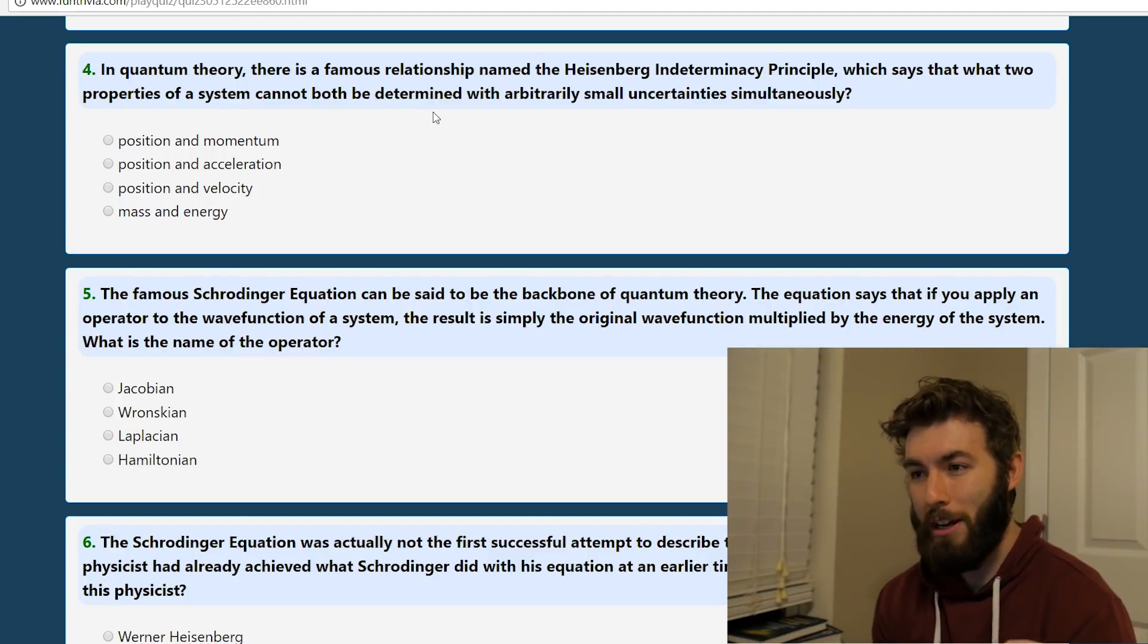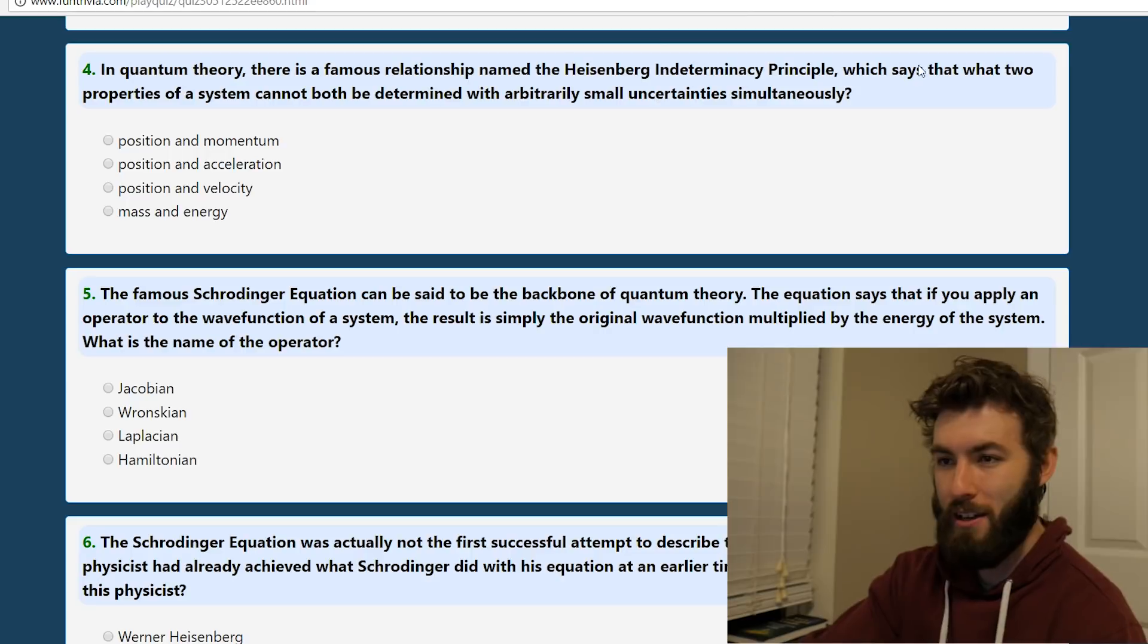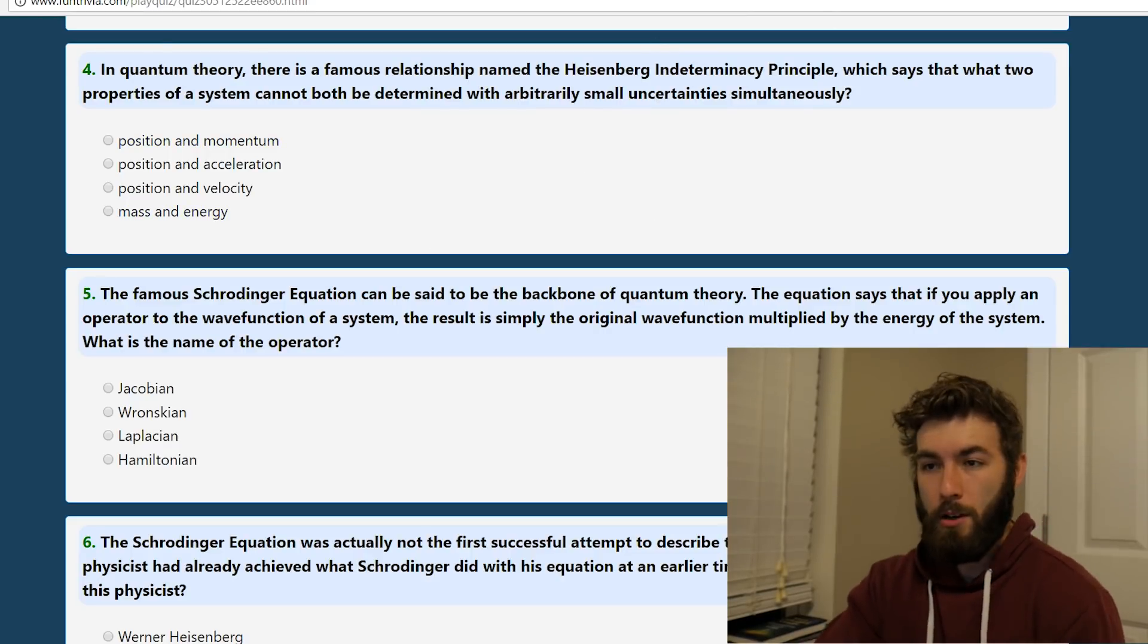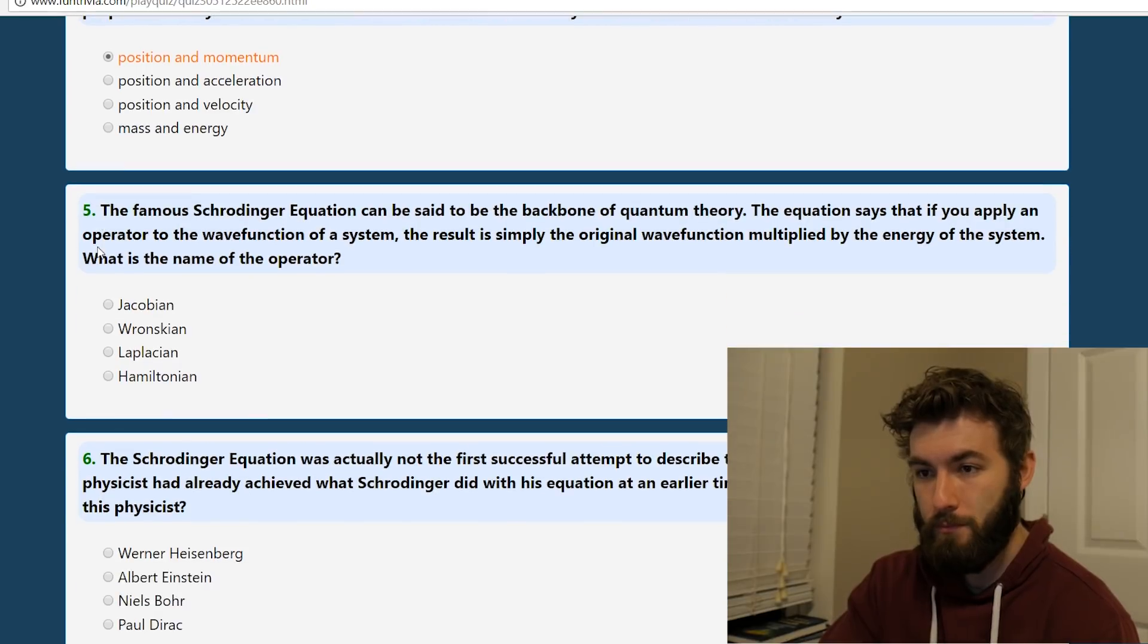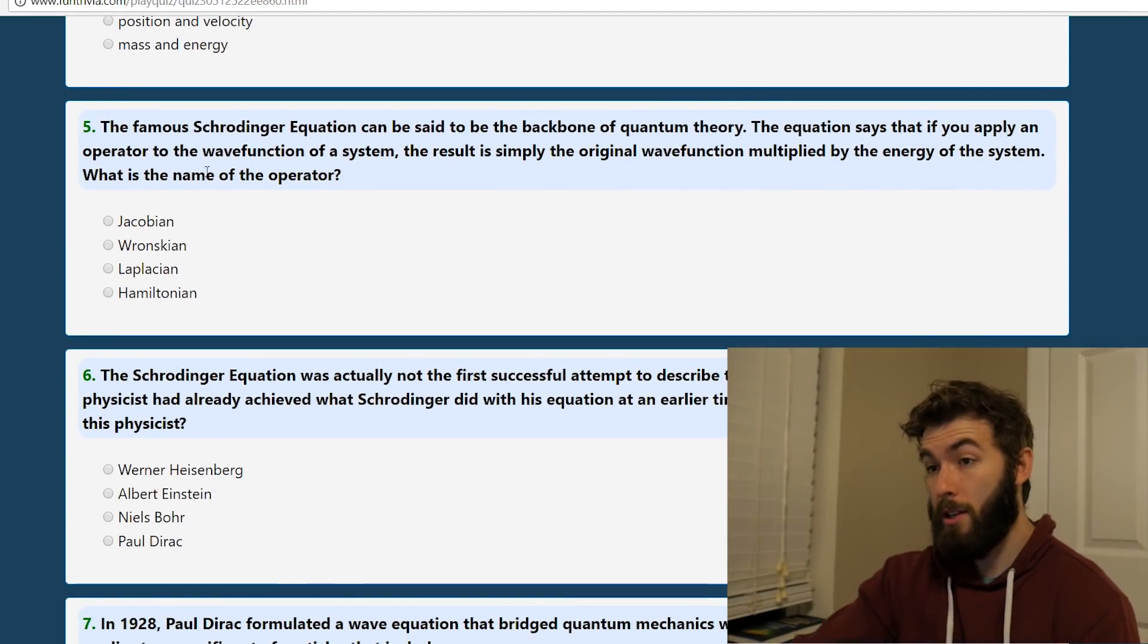In quantum theory, there's a famous relationship named the Heisenberg indeterminacy principle. Who, in their right mind, calls it indeterminacy principle? Which says that two properties of a system cannot both be determined with, this is the same question. This is position of momentum.